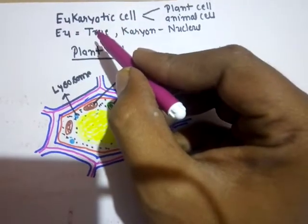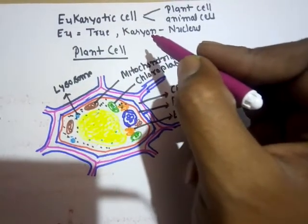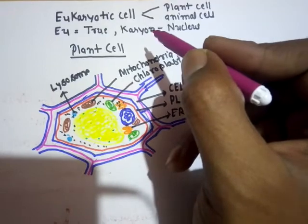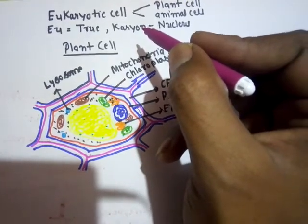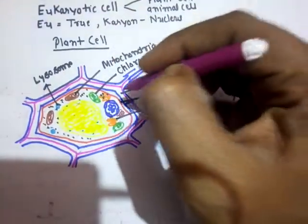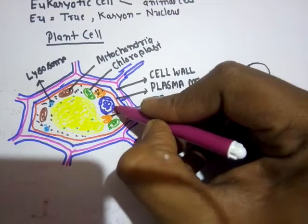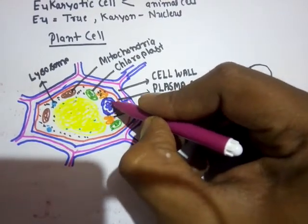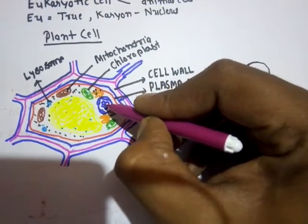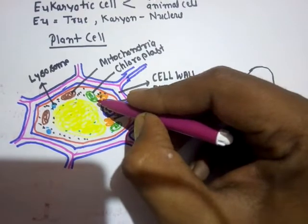The word 'eukaryotic' is made up of two words: 'eu' means true and 'karyon' means nucleus — that means cells with a true nucleus. In the case of the prokaryotic cell, there is no membrane-bound nucleus, no definite nucleus. But in the case of the eukaryotic cell, the nucleus is bounded by a membrane called the nuclear membrane, which forms the boundaries of the nucleus.